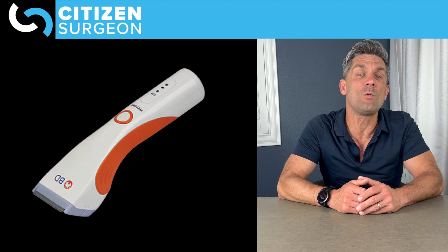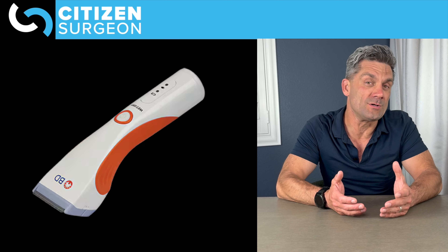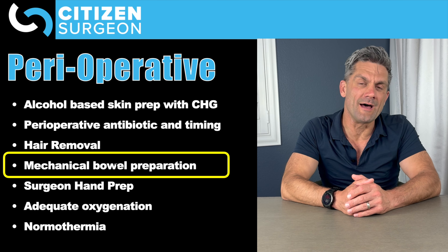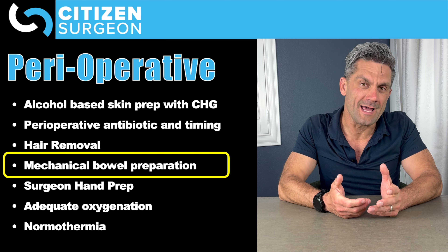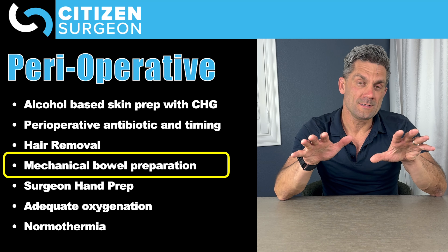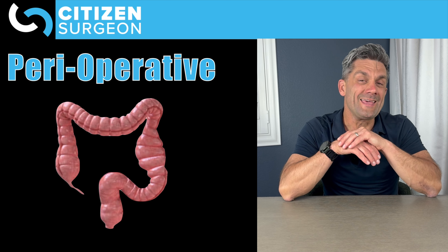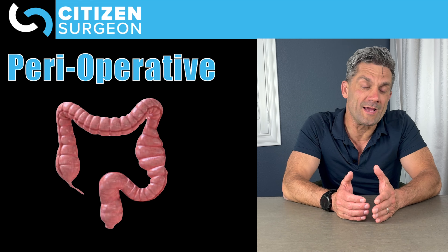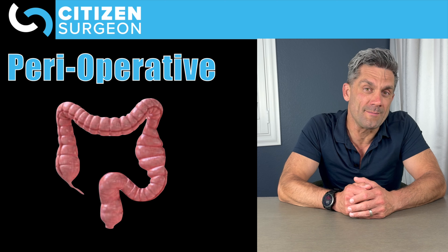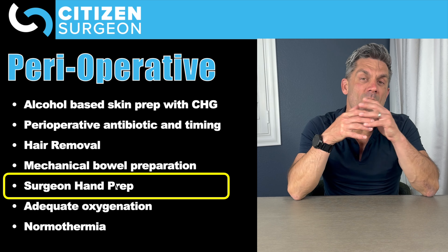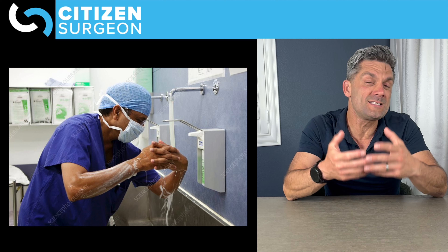Perioperative antibiotic timing is incredibly important. If an antibiotic is recommended for that particular surgery, it should be given within 60 minutes of the incision — the WHO guidelines say within 120 minutes, but 60 minutes is what we follow. An exception is vancomycin, which has a longer half-life and may need to be given up to two hours before incision. Antibiotics should never be given after the skin incision.